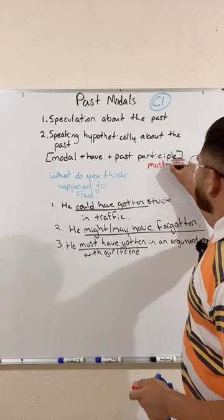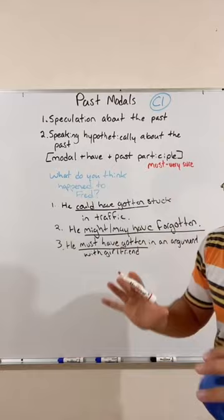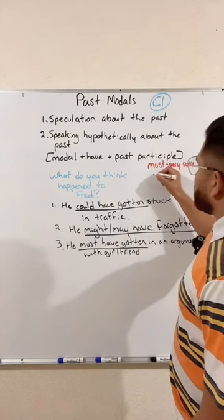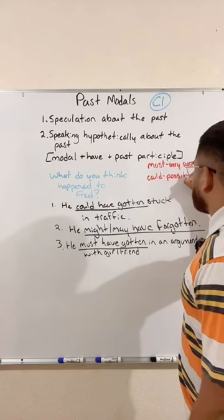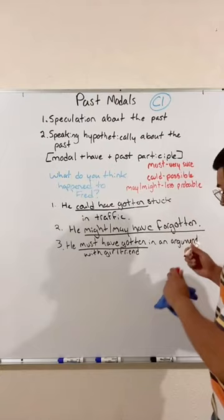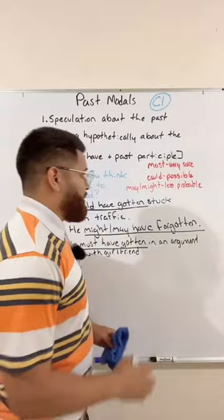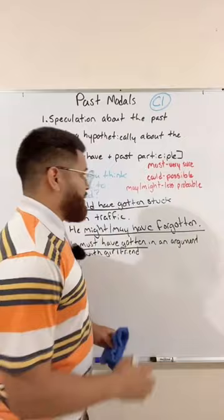We use 'must' when we are very sure about something. Remember, these are speculations — we're never 100% sure. We use 'could' when something is possible or probable. And we use 'may' or 'might' when something is less probable.